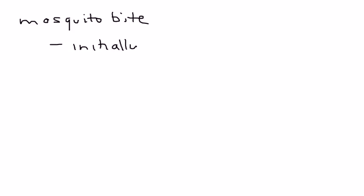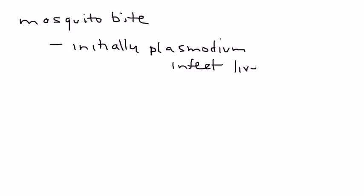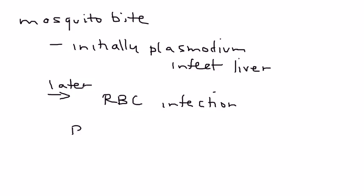The pathophysiology is that after a mosquito bite, the plasmodium will initially infect the liver — the hepatocytes, or liver cells — and then later it will move to the red blood cells. Once the red blood cells rupture, that is when symptomatology begins.